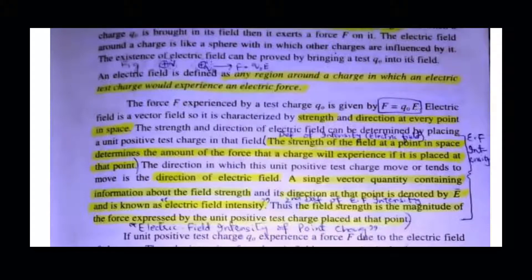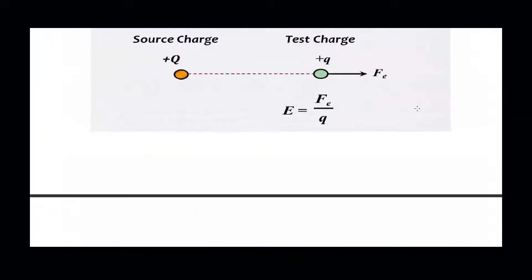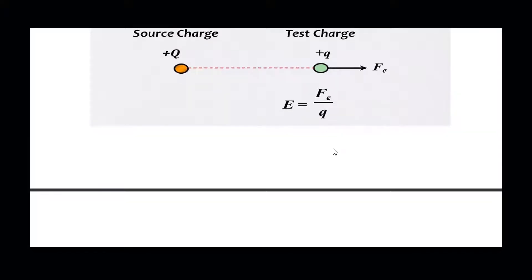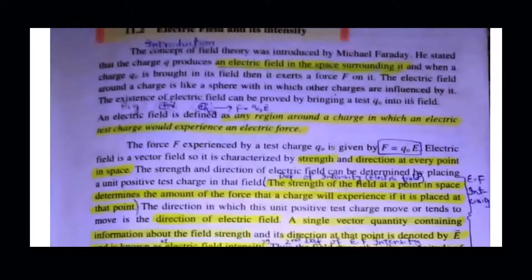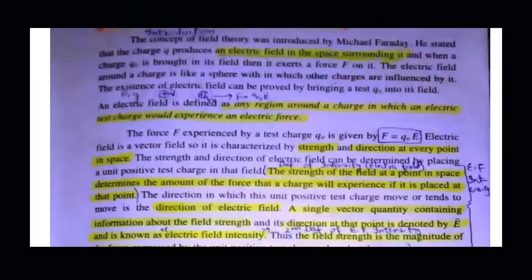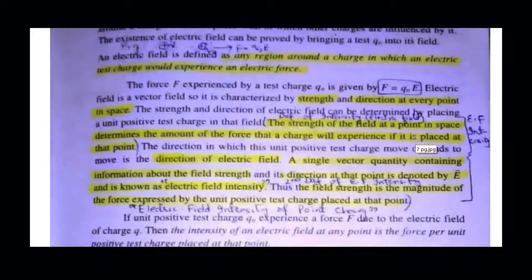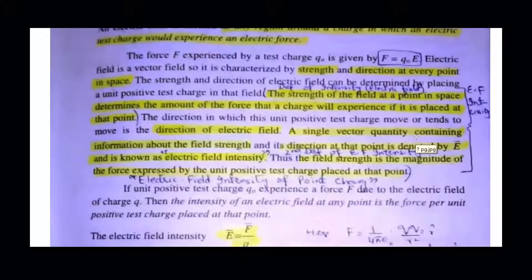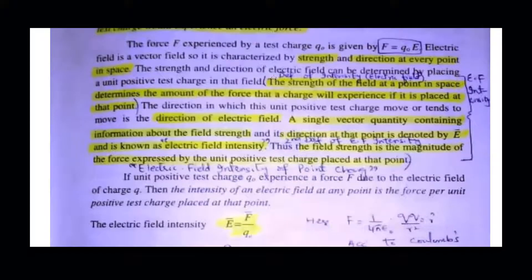Here is the force equal to q₀E — the electric field force. As electric field equals force per unit charge, we rearrange it so force equals charge times electric field. That's why force equals q₀E, where q₀ is the magnitude of the charge and E is the electric field intensity, which gives us the strength and force experienced by the test charge.